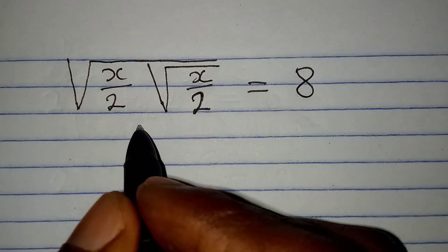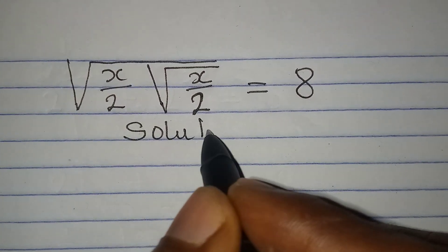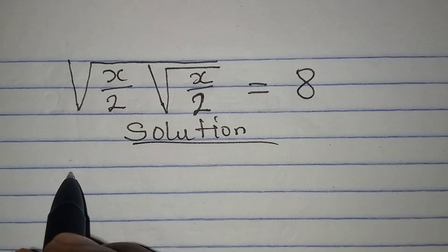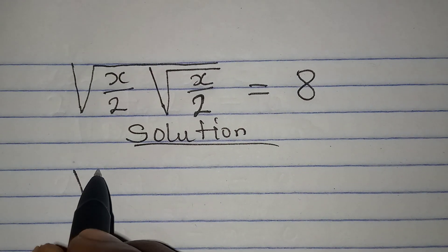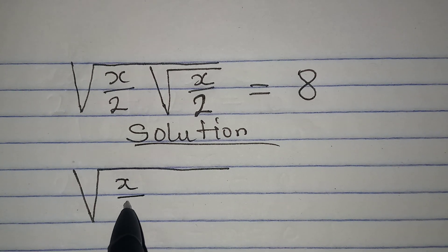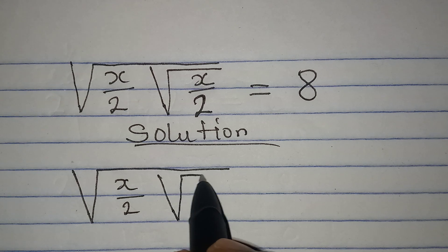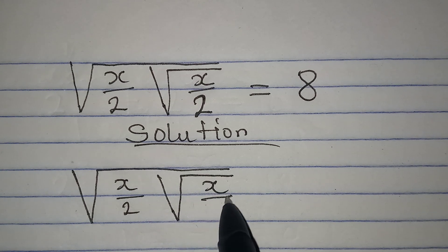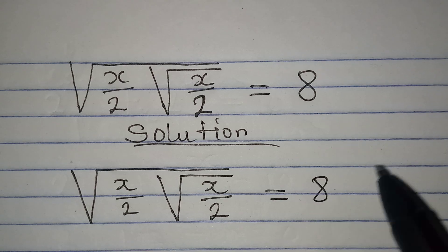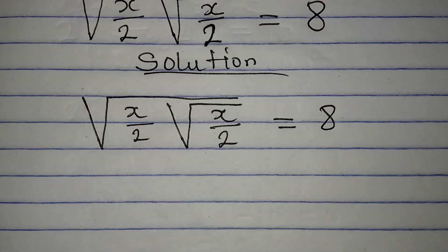Hello everyone, let's solve this olympiad mathematics problem. We have square root of x over 2, then square root of x over 2, equal to 8. This is what we want to solve.